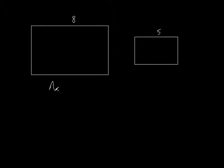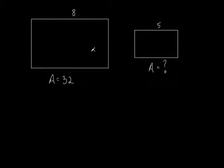Let's say one side is 8 and the other is 5, and the area of the first one is 32. We want to find the area of the second one. We're solving for A2, so we put that on top. Using our formula, we compare A2 to 32, and then compare the sides squared. Since we're going right to left, we compare the right side to the left side.